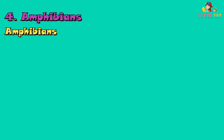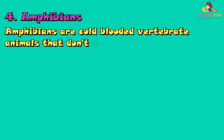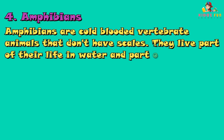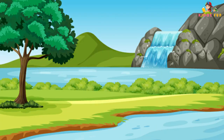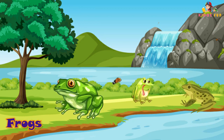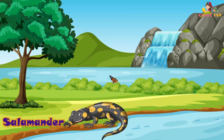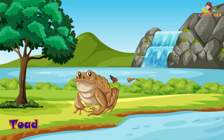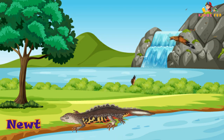Amphibians are cold-blooded vertebrate animals that don't have scales. They live part of their life in water and part on land. Some examples are frog, salamander, toad, and newt.